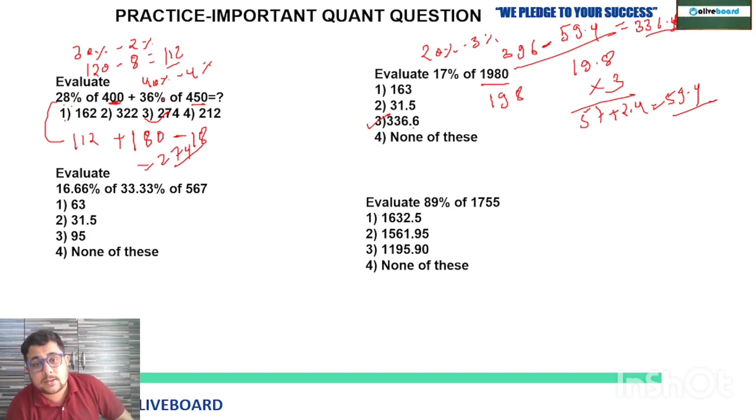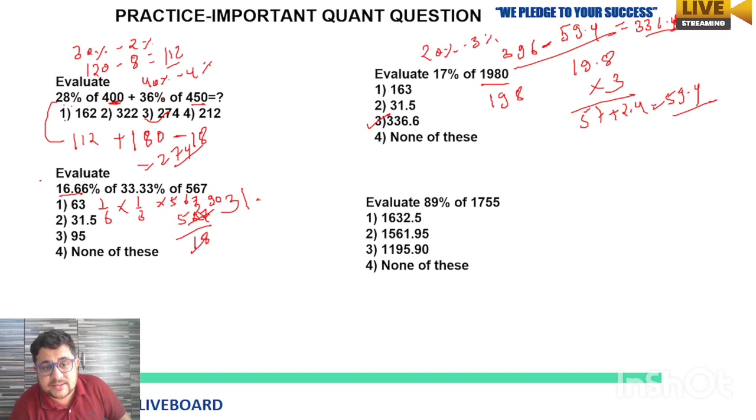Third one: 16.66% of 33.33% of 567. The value is in decimal, but as I told you at the beginning, some questions can be done by the fraction rule. 16.66% can be written as 1/6, 33.33% as 1/3, multiply by 567. 6 times 3 is 18, 567 by 18: 18 times 3 is 54, 18 times 1 is 18, remainder is 9, increase 0 decimal. 18 times 5 is 90, so 31.5. Your answer is option 2.